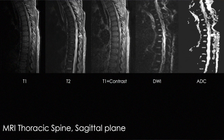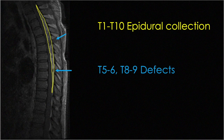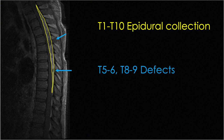The lesion is hypo-intense on T2-weighted imaging and is contrast-enhancing on T1 with contrast. When we zoom in on the T1-weighted imaging with contrast, we can see the epidural collection, which is hyper-intense and contrast-enhancing, highlighted in yellow. There are also two defects highlighted with blue markers, which appear to be surgical sites from prior intervention.